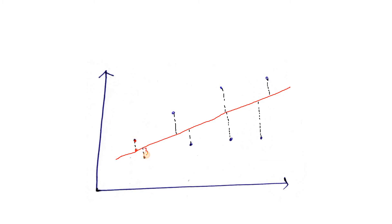For some data points, the error is positive (actual higher than predicted) and for others it is negative (predicted higher than actual). If we simply sum all errors, positive and negative errors might cancel each other out, giving a very small value — which could lead us to misinterpret our model as very good when it is not. So instead, we take the square of all the errors and then take the summation. This is called the residual sum of squares.